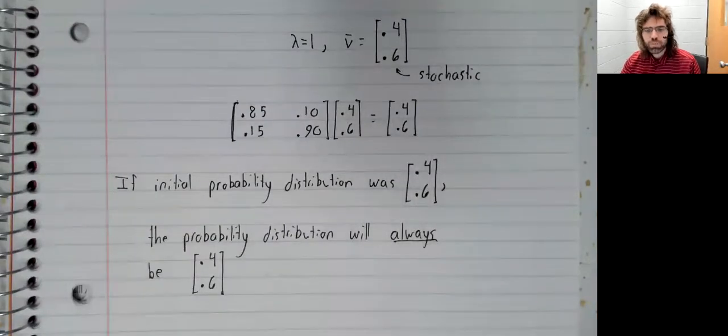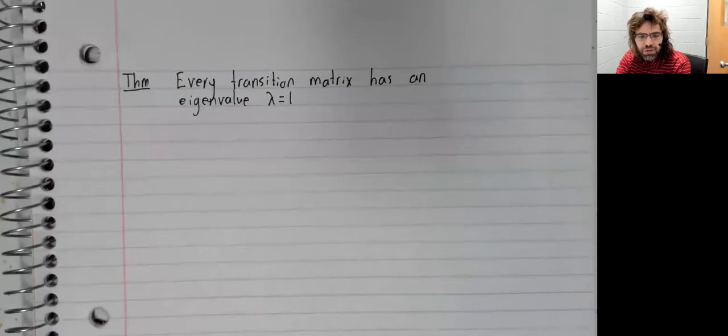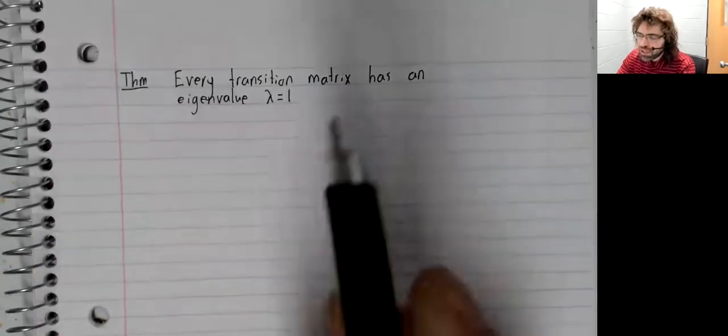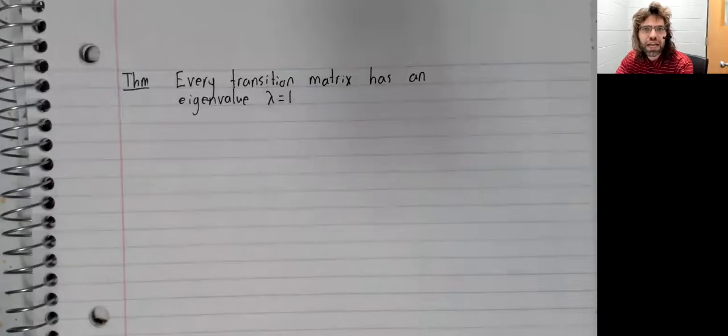Now, a definition and a theorem, or two theorems, that say every transition matrix has an eigenvalue of one. So no matter what the details of the Markov chain, the transition matrix definitely has one as an eigenvalue.